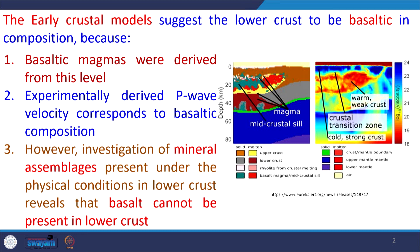Why basaltic composition? The argument is that the basaltic magma was derived from this level. The crustal depth increases inside and the lower crustal composition at about 40 kilometers is the level where this basaltic magma is deriving. So it is obvious to think that the lower crustal composition would be basaltic in nature. To substantiate that, experimentally derived P wave velocity corresponds to basaltic composition.